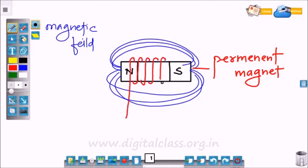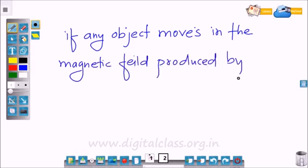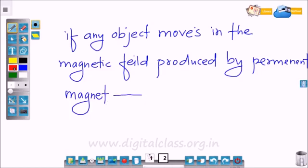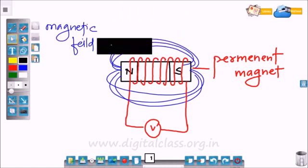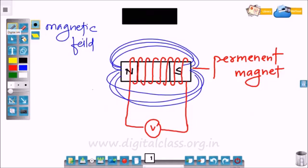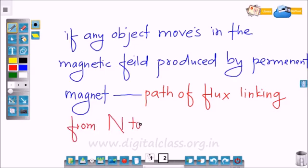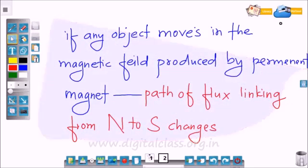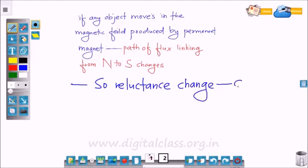This magnetic pickup consists of a permanent magnet with a coil wound around it. If any object moves in the magnetic field produced by the magnet around it, the path linking from N to S pole changes. There is obstruction in the path, so reluctance changes.